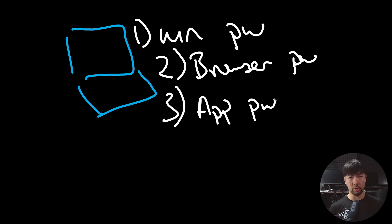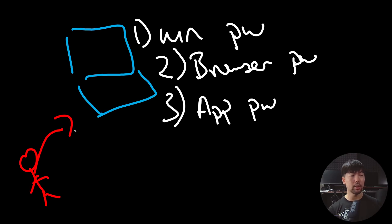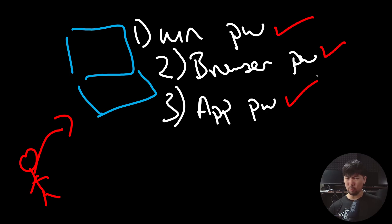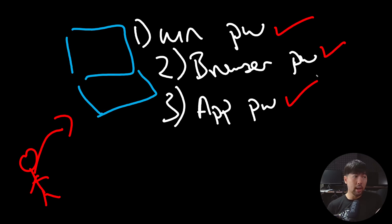Once a hacker gains access to a computer — whether physically or through remotely accessible services — they will target all these different passwords to find the credentials used by the user, and possibly gain unauthorized access to additional systems, applications, and social logins.